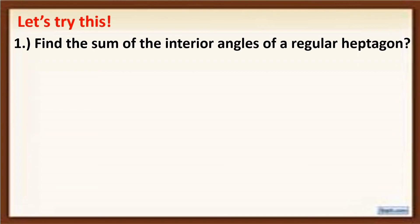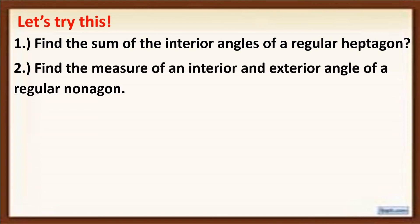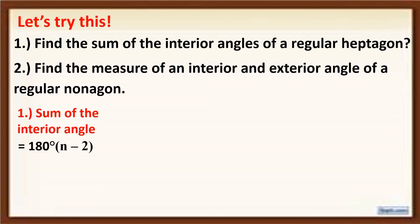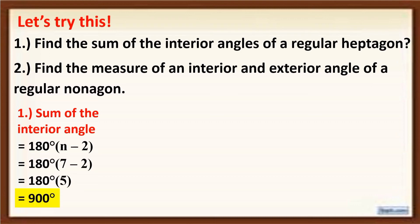Now let us try this. Find the sum of the interior angles of a regular heptagon, and find the measure of an interior angle and exterior angle of a regular nonagon. To get the sum of the interior angles of a heptagon, we use the formula 180 degrees times (n minus 2). A heptagon has 7 sides, so we substitute 7 for n. Simplifying: 7 minus 2 equals 5, and 180 degrees times 5 equals 900 degrees. Therefore, the sum of the interior angles of a regular heptagon is 900 degrees.